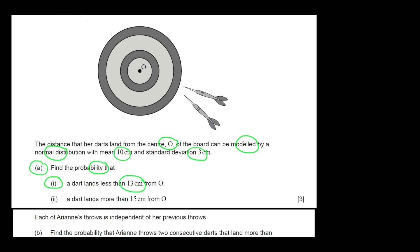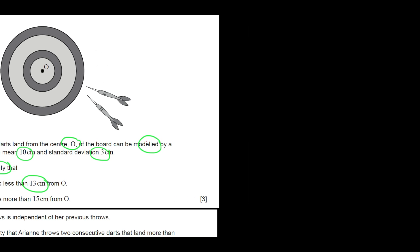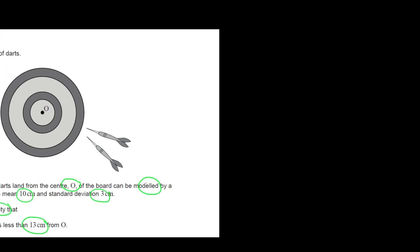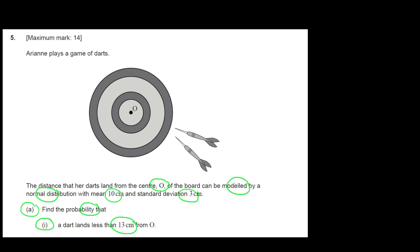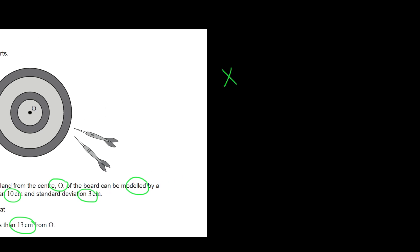So we do have here the normal distribution. Let's consider our variable, in this case the landing distance from O, which is going to be normally distributed with the mean of 10 and the variance of 3 squared. We want the probability that this x is going to be less than 13. So we go to our calculator.